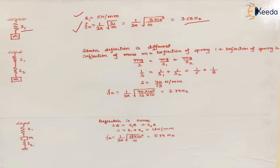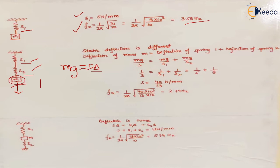In the second case, there are two springs S1 and S2 connected in series, with a mass attached to this combination. If there is some deflection taking place in mass M, it will be equal to the sum of deflections of springs S1 and S2. We know the formula for deflection: the spring force Mg equals S × δ. The deflection of the whole system is the sum of deflections of S1 and S2, so Mg upon S_eq equals Mg upon S1 plus Mg upon S2. Mg cancels out.